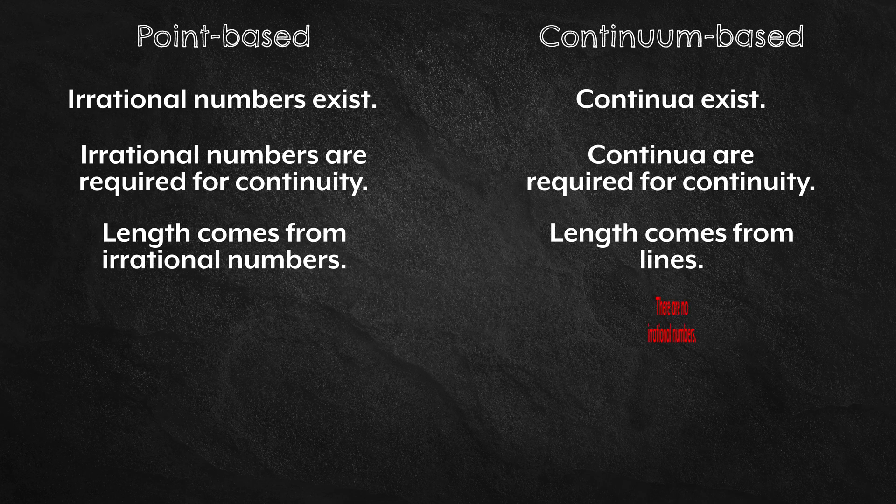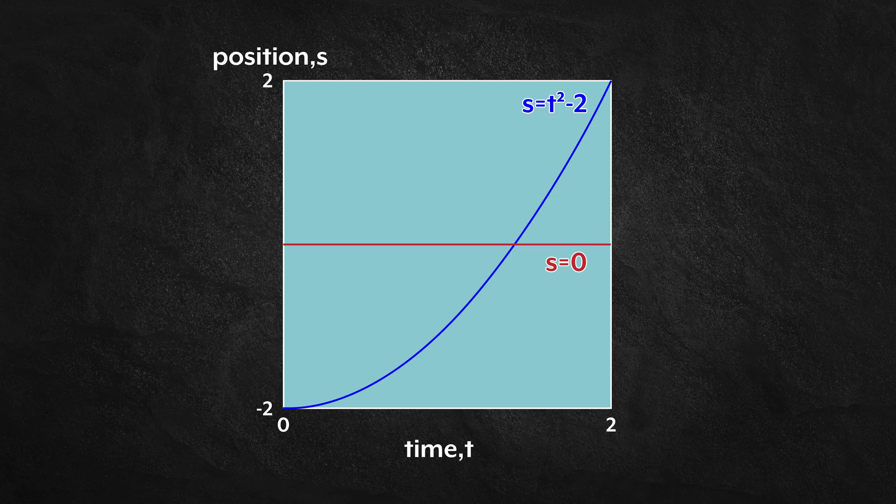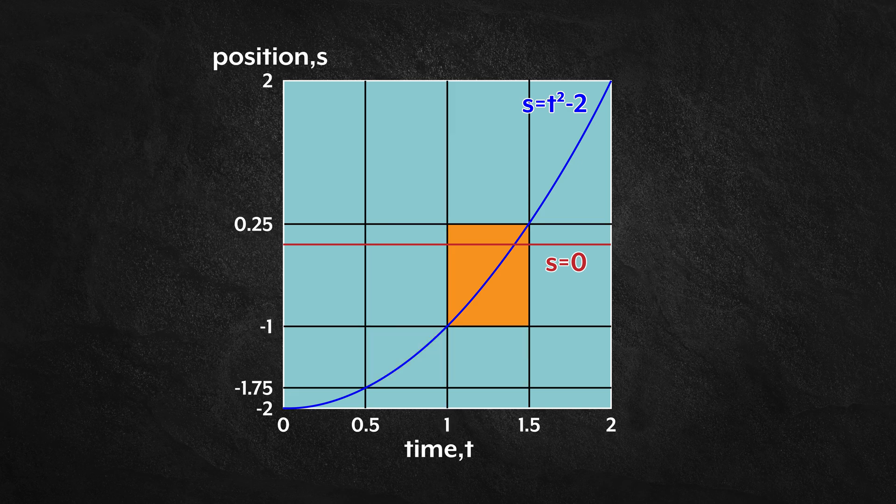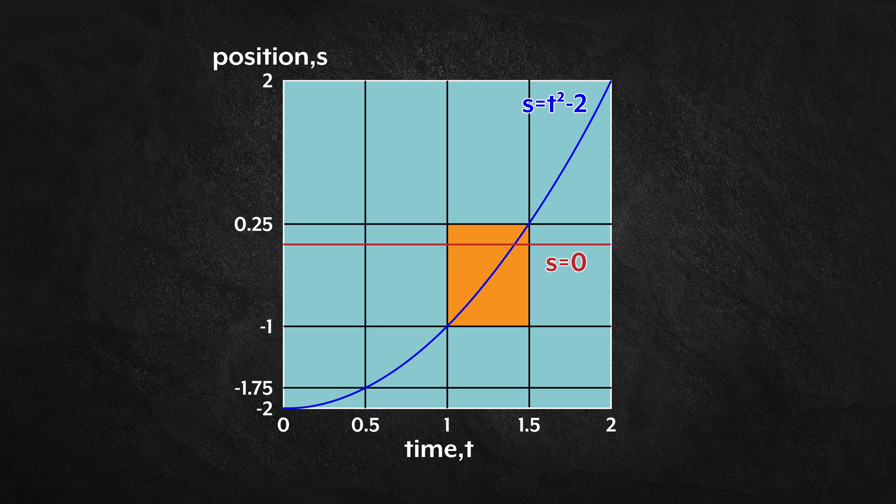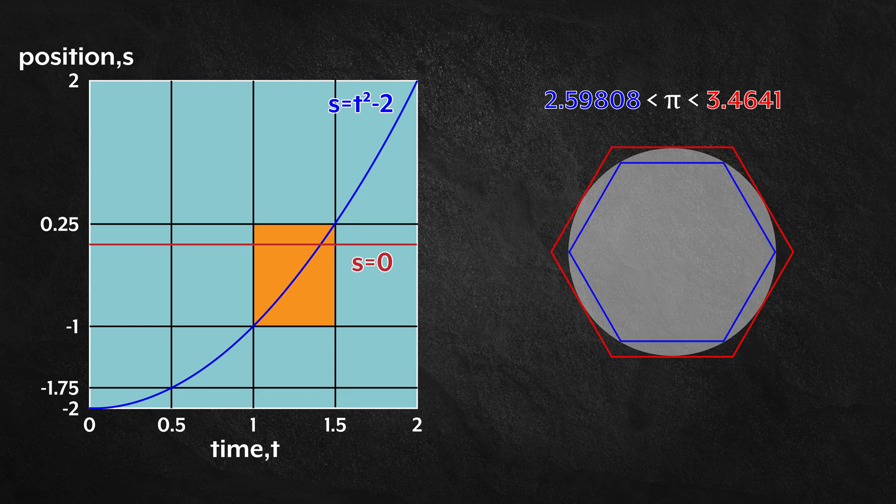But the continuum-based view is not free of complications. With continuum-based constructions, there are no irrational numbers. So if you ask me where these two curves intersect, I can't say the point with coordinates root 2 and 0. While I can narrow in on a range within which I am certain that they intersect, I have to concede that I am uncertain of the exact coordinates. Uncertainty is a fundamental part of continuum-based constructions. But this idea is not new.